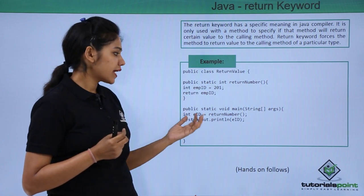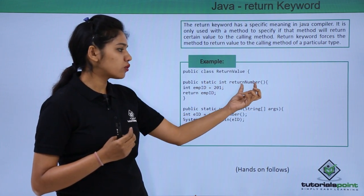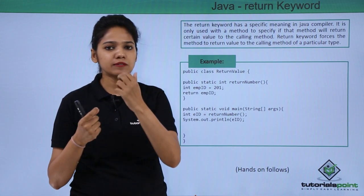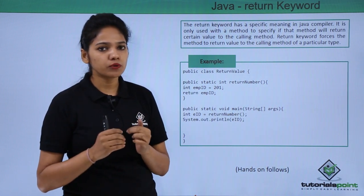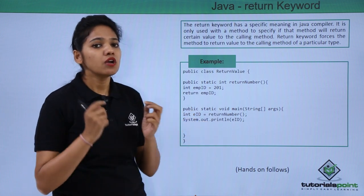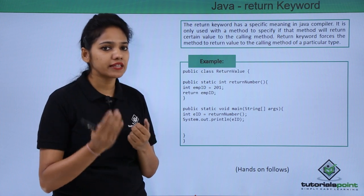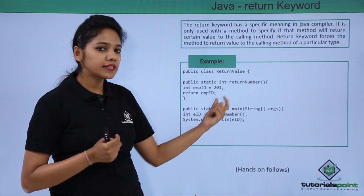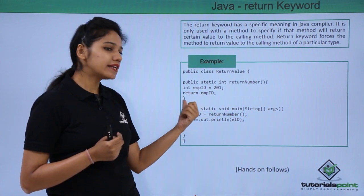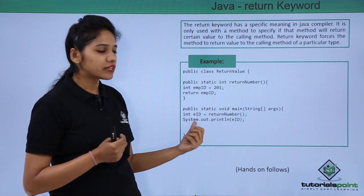We close the braces, and in the main method we call this return-value method. In the case of a void method you just call the method like display() and it displays output directly because it does not return any value. But in the case of a method that returns a value, that returned value needs to be first stored somewhere and then printed. So you call the returnNumber method and store the integer value in an integer type variable.